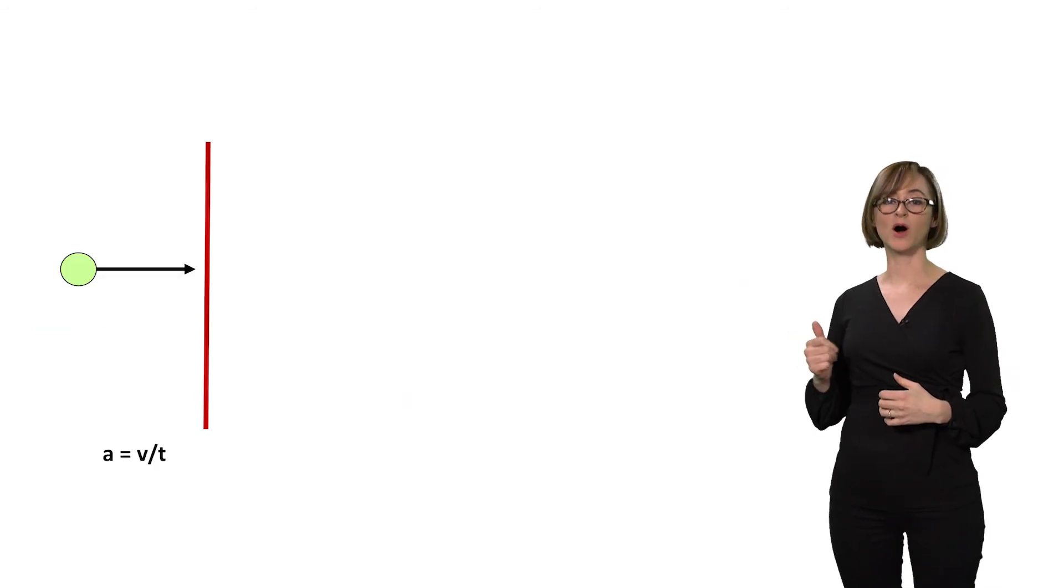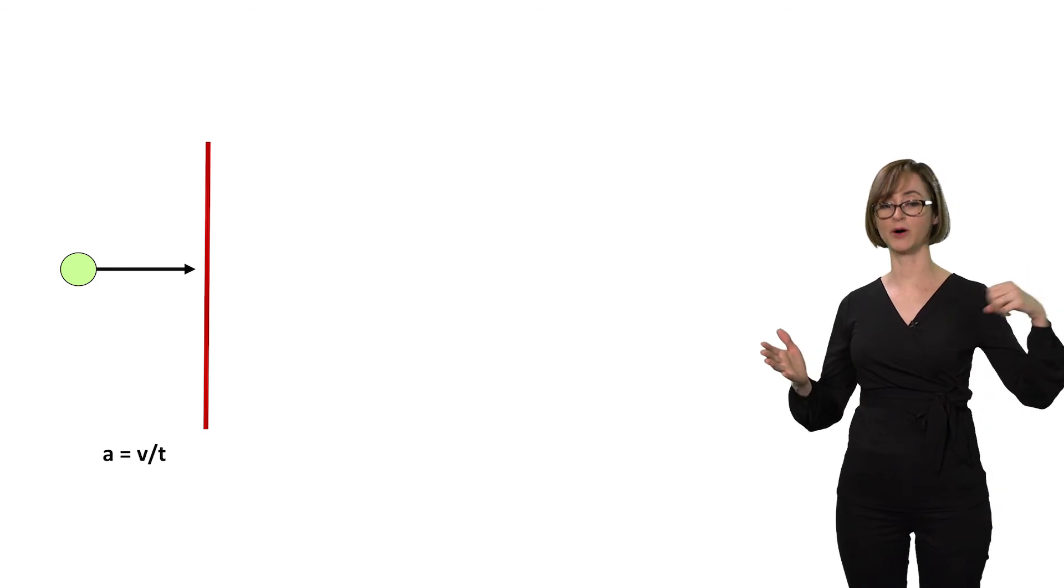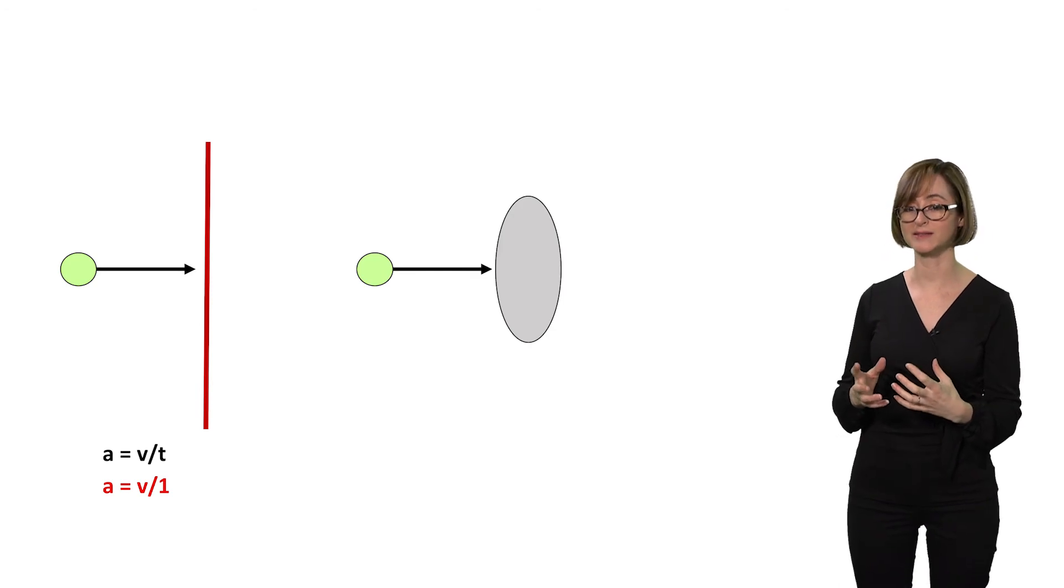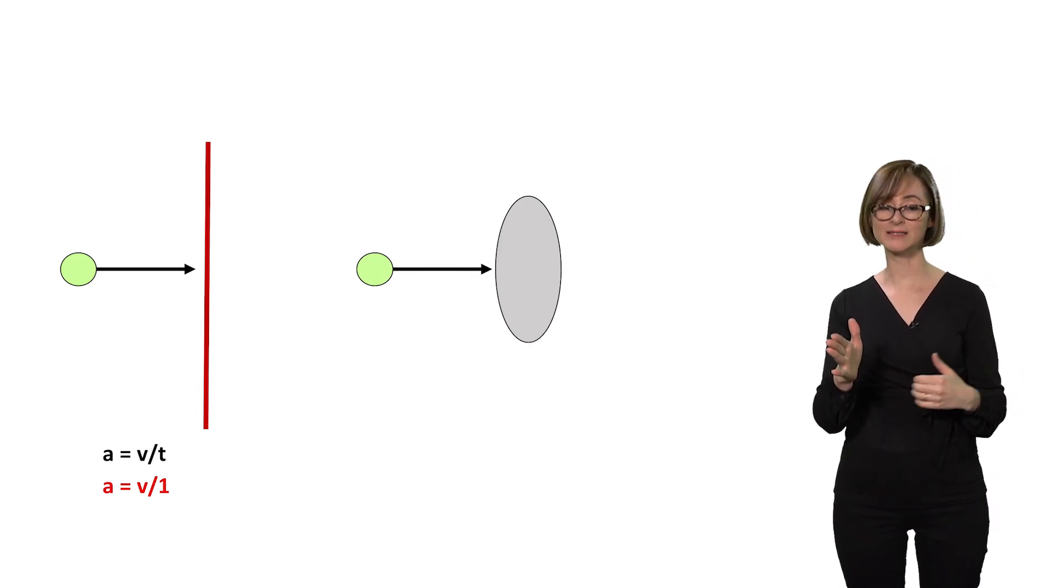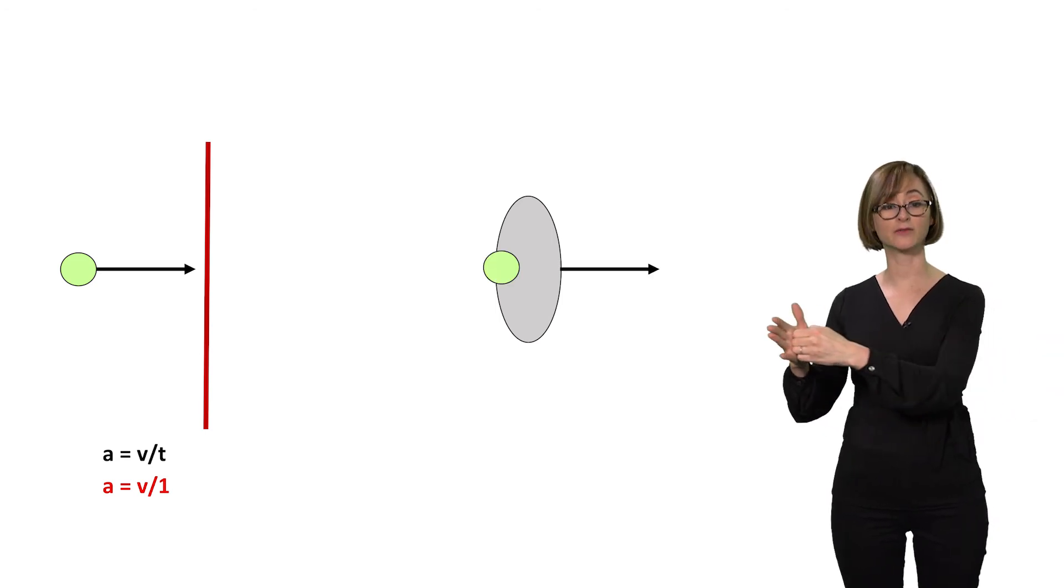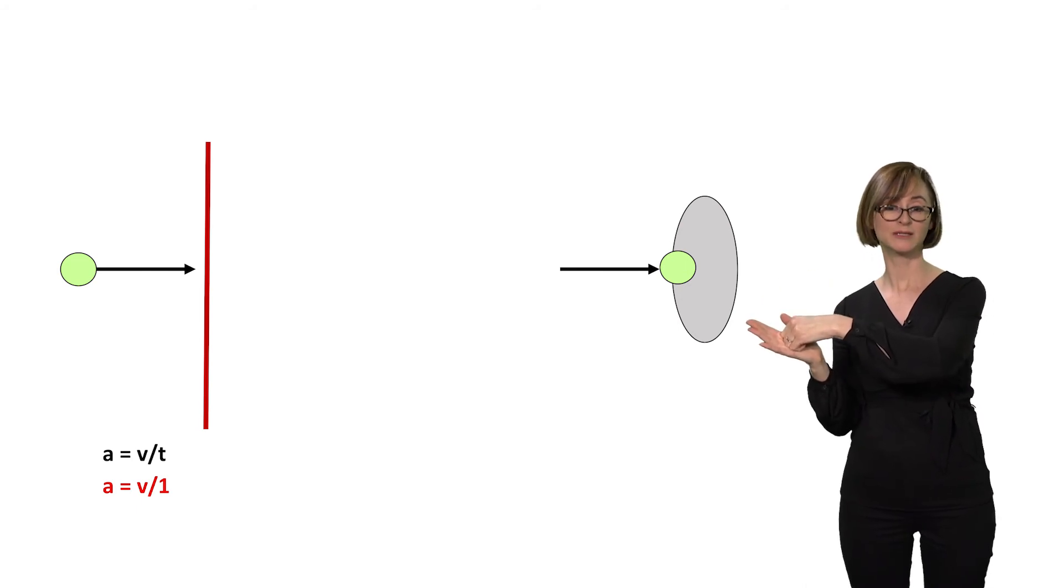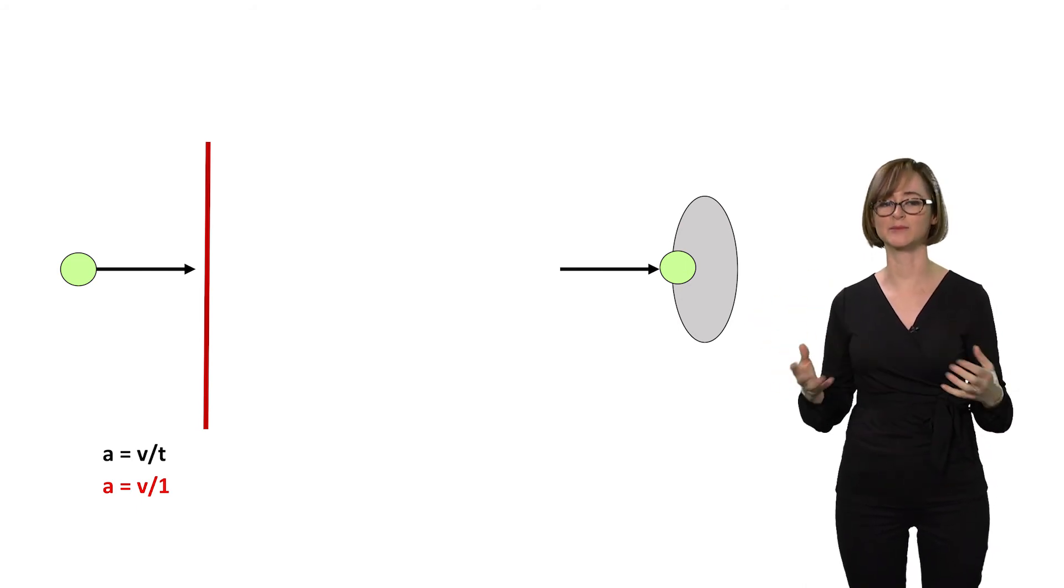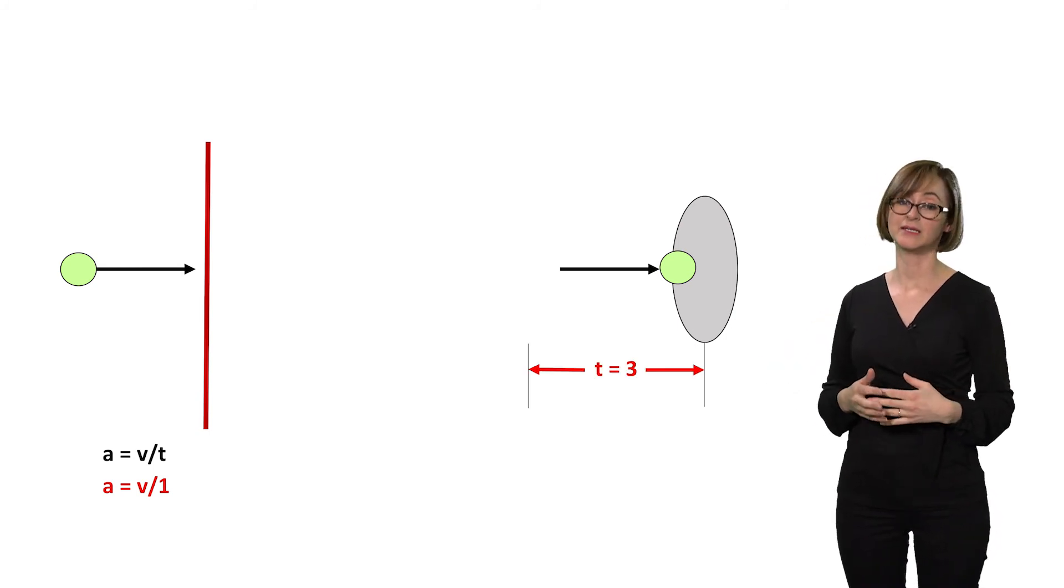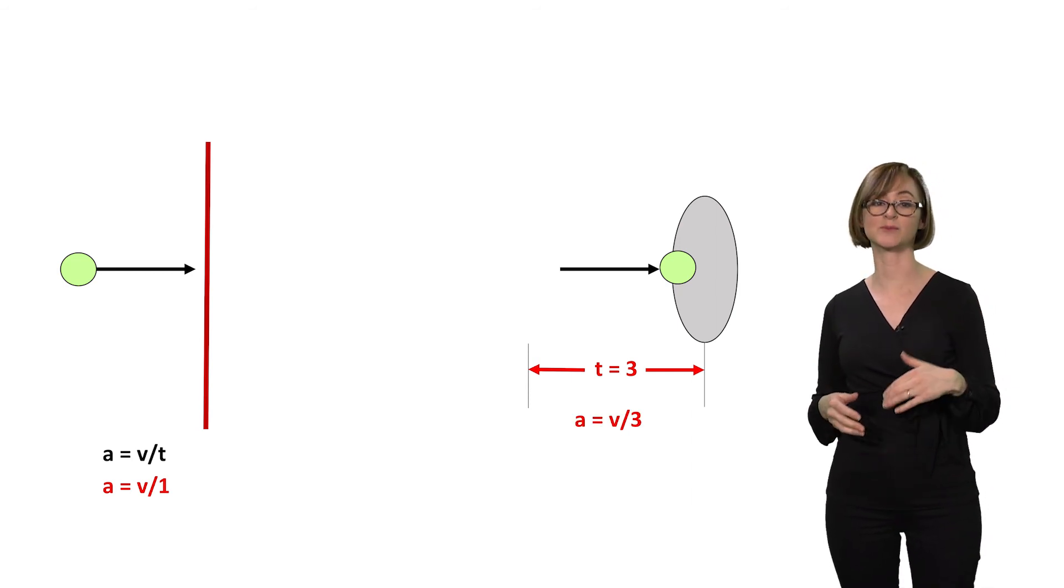Imagine that instead of hitting a wall, the tennis ball was hitting a racket. For the wall, let's pretend that the time it took to go from the ball's velocity to zero was one second. Now, here's the ball hitting a racket. If the racket stays in place, the time is the same as for the wall, still one second. But if the ball hits the racket and the racket moves, or deforms in the same direction as the ball before it comes to a stop, now the ball has a lot more time to slow down. Let's say the racket takes three seconds to come to a stop. Now the velocity has three times longer to slow down, so acceleration is going to be three times smaller than before.